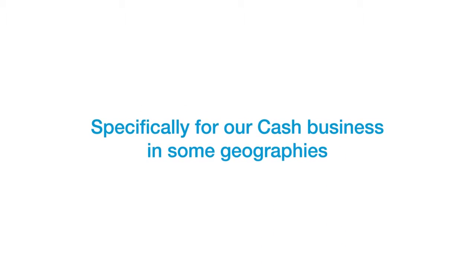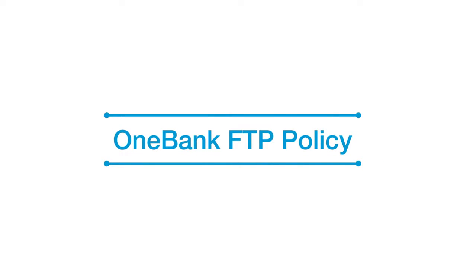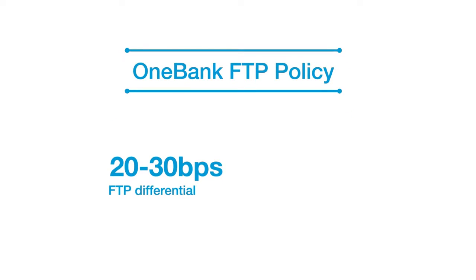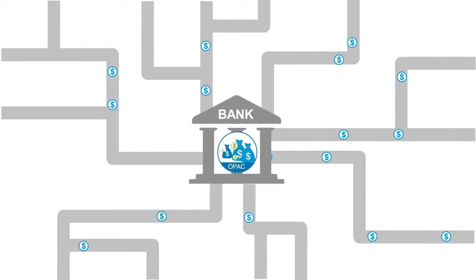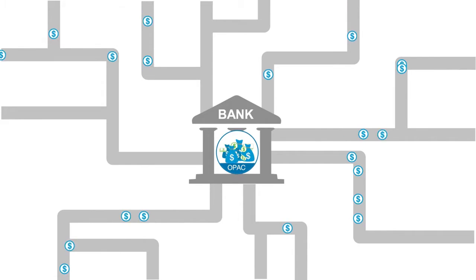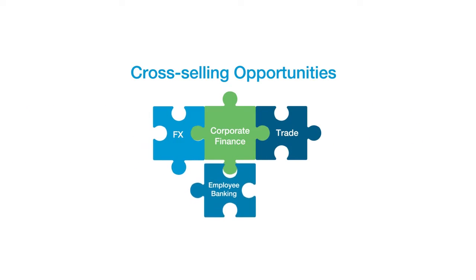Specifically for our cash business in some geographies, the resultant FTP could be higher for OPEC deposits under the one-bank FTP policy. The difference in FTP could potentially be as much as 20 to 30 basis points, which means you could potentially grow your portfolio's cash net interest income on the same deposits by converting from non-OPEC to OPEC. And when we drive OPEC conversion through incremental transaction flows, it enables the bank to generate more fee income from those operating accounts.